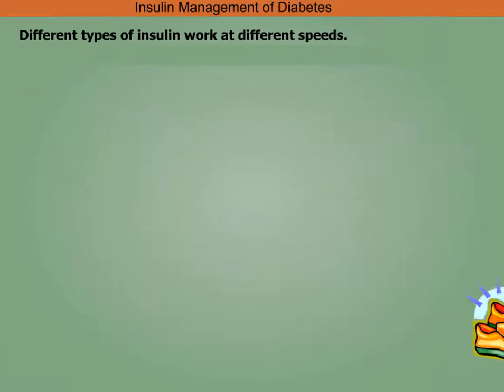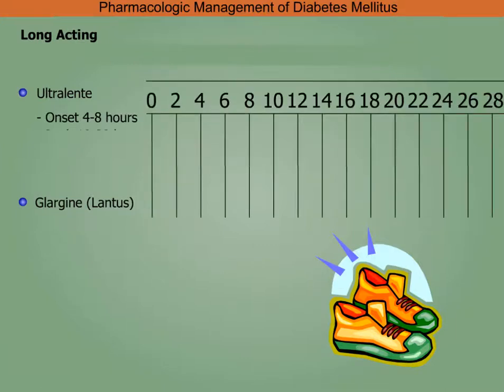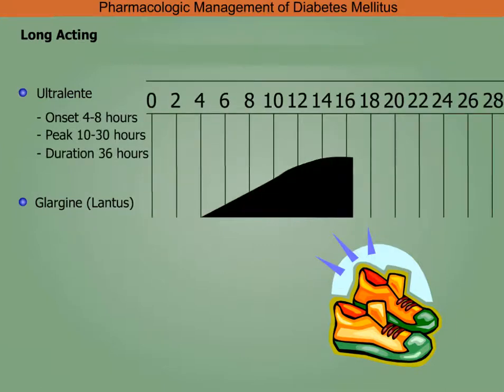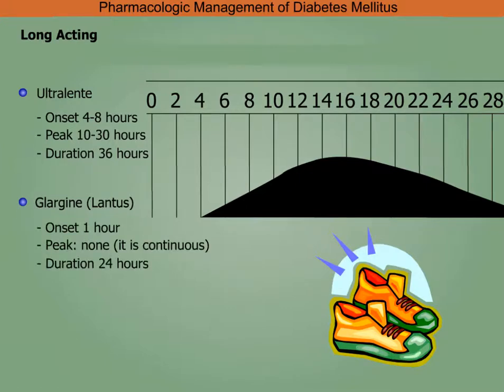Long-acting Ultralente has an onset in four to eight hours, peaks in 10 to 30 hours, with a duration of 36 hours. Glargine has a continuous peak with a duration of 24 hours.